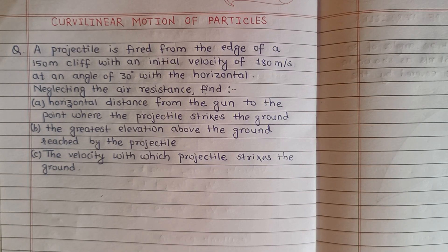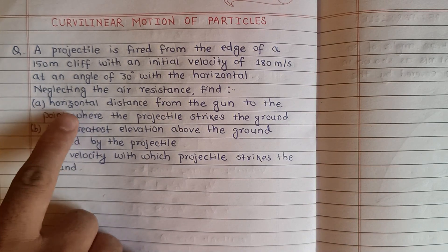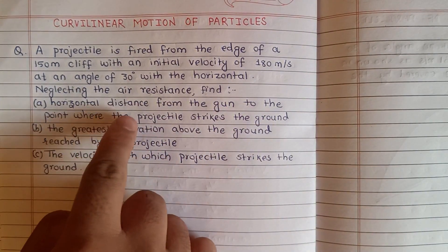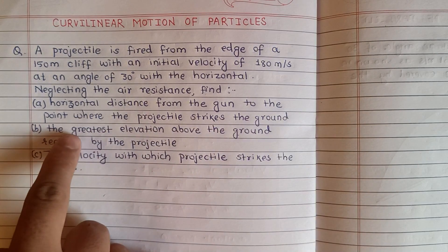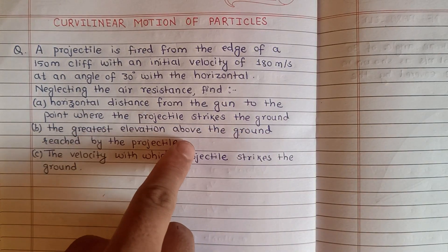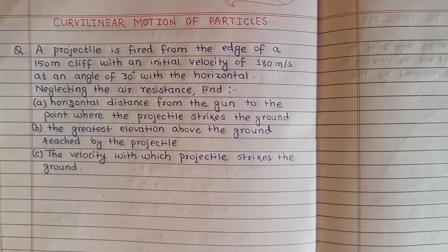The question is: a projectile is fired from the edge of a 150 meter cliff with an initial velocity of 180 meter per second at an angle of 30 degrees with the horizontal. Neglecting air resistance, find: the horizontal distance from the gun to the point where the projectile strikes the ground, the greatest elevation above the ground reached by the projectile, and the velocity with which the projectile strikes the ground.